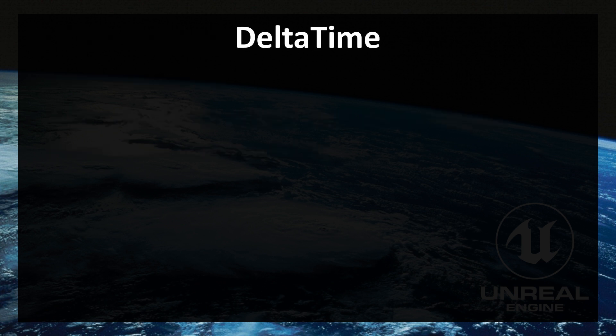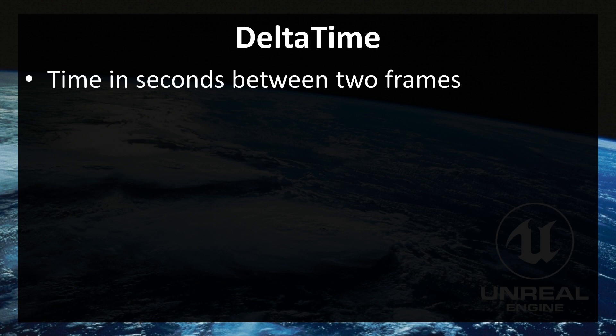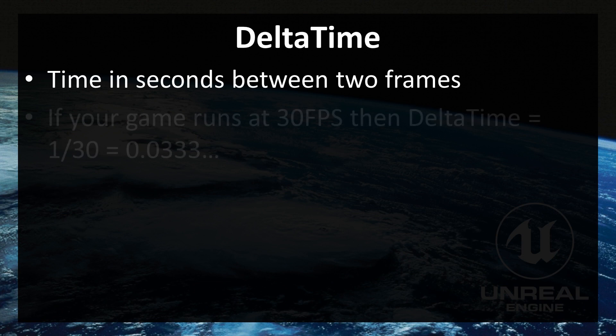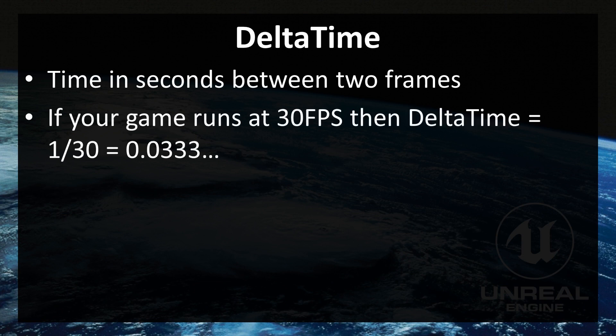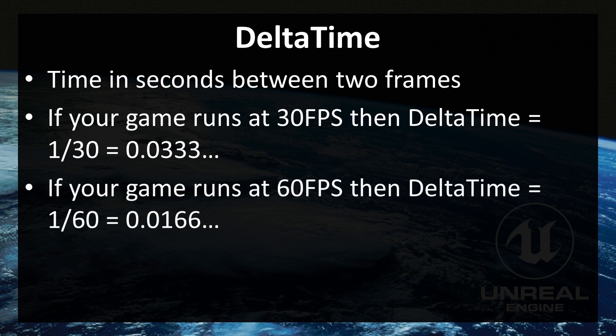So what is delta time? It is the time in seconds between two frames. For example, if your game runs at 30 frames per second, then there are 30 distinct frames in one second. That means the time between two distinct frames is 1 divided by 30, which is 0.0333333, etc. Down here you can see the example for if your game runs at 60 frames per second.